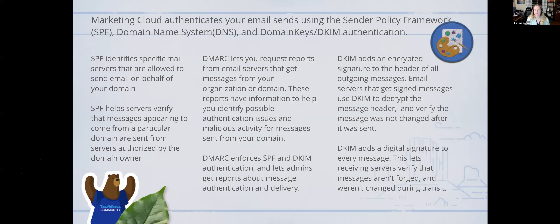The next piece is your sender policy framework. This is basically your handshake from Marketing Cloud into your ISPs — your inboxes. In order to get through those gateways, you have to have records in place that tell all those ISPs that yes, Marketing Cloud has permission to send on behalf of your company. You need to understand whether the company plans on using their own domains and hosting most of their records, or if they plan on using Marketing Cloud-hosted records, because there are different pieces that you'll need to engage a services team or support team to configure on the Marketing Cloud side.